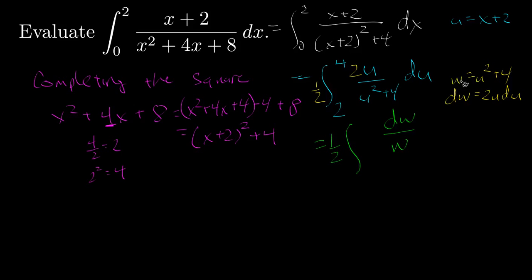It's no longer 2 to 4, but now these are values of w. So when u equals 2, this is 2 squared plus 4. So 4 plus 4, that's 8. And now when u equals 4, then w is 4 squared plus 4, so that's 16 plus 4, that's 20.